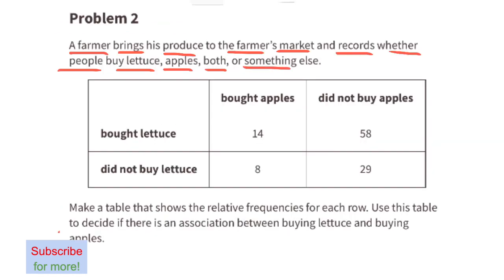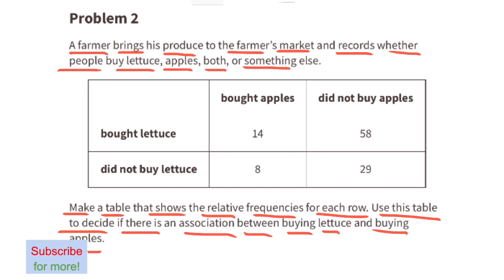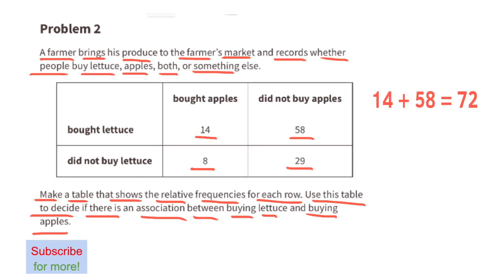Problem 2: A farmer brings his produce to the farmer's market and records whether people buy lettuce, apples, both, or something else. Make a table that shows the relative frequencies for each row, and use this table to decide if there's an association between buying lettuce and buying apples. First, let's figure out how many people bought lettuce: 14 people bought lettuce and apples, and 58 people bought lettuce but didn't buy apples — that's a total of 72 people who bought lettuce.